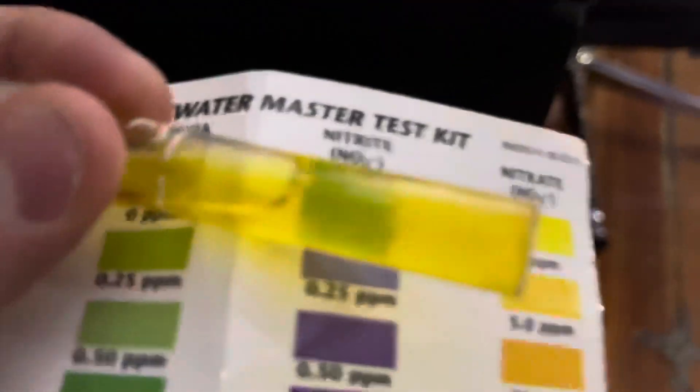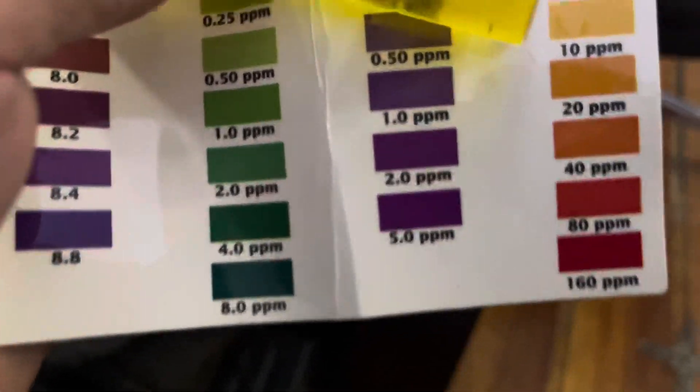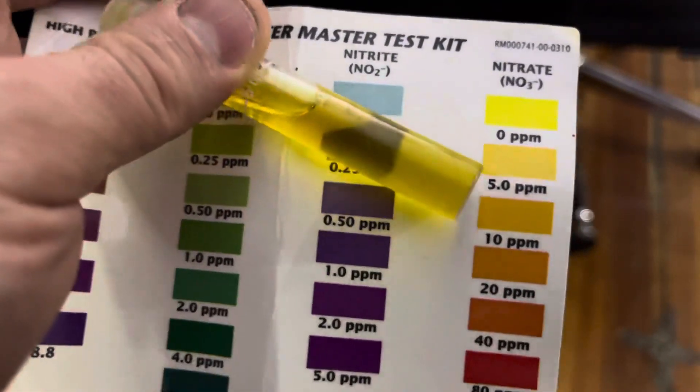The nitrite level is zero. It's clearly zero, there's no purple there. And then lastly we have our nitrate, and our nitrates look like it's around five parts right there. It's definitely at the five part.